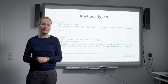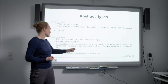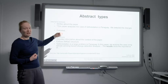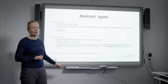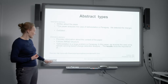There are two different abstract types. First, descriptive abstracts — these are abstracts about the paper. A typical sentence would be: 'This paper analyzes the case of deforestation where we detected the changes.' These descriptive abstracts are kind of outdated and used mostly by librarians. In scientific writing, we work with informative abstracts, which provide information about the content of the paper and follow the IMRAD structure. You can recognize an informative abstract because it shows results — for example, 'the results show the importance of...' — whereas a descriptive abstract refers to results elsewhere. In science writing, we use informative abstracts.